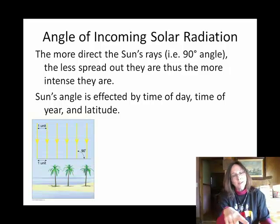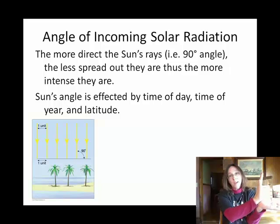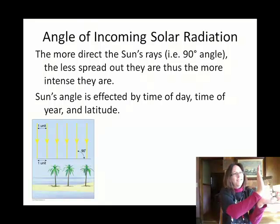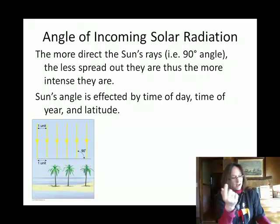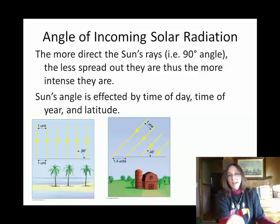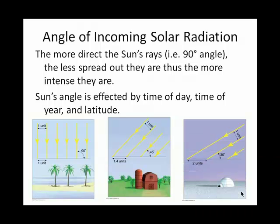These diagrams show you, for instance near the equator at the equinox — which I'll explain in Chapter 2 — as the sun hits noon, the sun is right overhead and makes a 90-degree angle. If you're at the middle latitudes, kind of like a farm there, the highest the sun ever gets might be about 45 degrees. And if you're near the poles — you can see a little igloo there — the highest the sun might get in the sky is about 30 degrees.